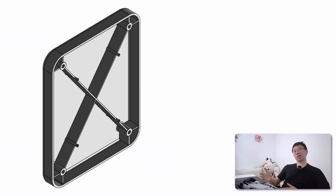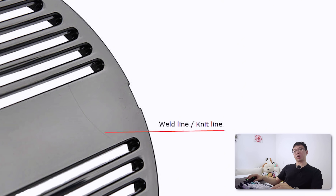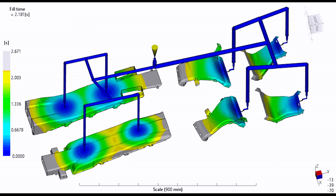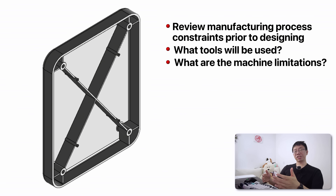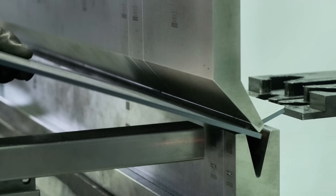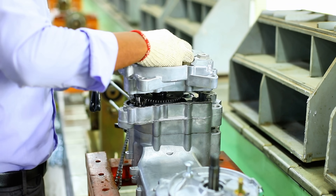I once reviewed a plastic enclosure design that had ribs terminating into a thin wall with no fillets. This ultimately created knit lines and weak spots during injection molding, causing the part to crack under assembly torque. The design was technically functional in CAD but completely ignored the packing and flow behavior of molten plastic. Always review manufacturing process constraints before modeling: what tools will be used, machine or mold limitations, minimum draft angles, and assembly access. Good design considers the entire manufacturing and assembly process from the start to avoid costly late-stage rework.